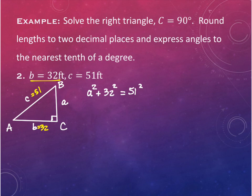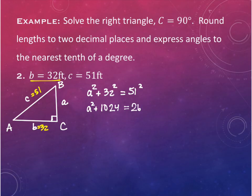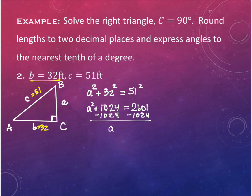Grab your calculator and square 32 and 51. 32 squared is 1,024 and 51 squared is 2,601. We subtract 1,024 from both sides, leaving A squared on the left. 2,601 minus 1,024 gives us 1,577.